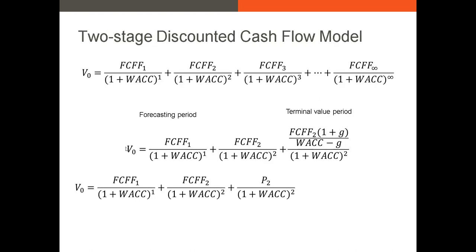The two-stage DCF model has two main components. The first is the forecasting period — the first couple of years when you can accurately individually estimate each period's free cash flows to the firm. FCFF1 is your free cash flow over the next year, FCFF2 is two years from now, and we discount those back to the present at the weighted average cost of capital.